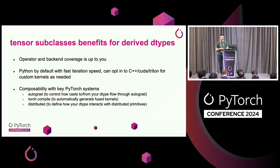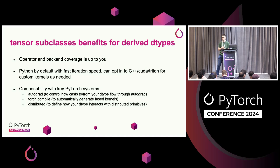So what does this approach buy you? First, it buys you a lot of flexibility when you define your op and backend coverage. If you were to implement a new Torch dtype, people would ask you to cover various backends and ops. If you extend a tensor subclass, you can pick and choose which ones you need for your specific use case. Second, you get to stay in Python — you can do a lot of things entirely in Python, but you still have the flexibility to jump into C++ or Triton if you want to write custom kernels. And third, you get composability. If you author your tensor subclasses in a specific way, you can compose with Autograd to customize your derivatives, compose with Torch Compile to get fast kernels for free, and compose with Distributed to define how distributed communications behave in low precision.